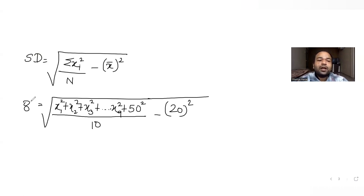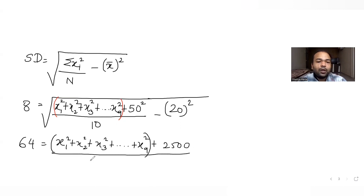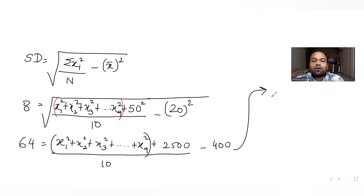We use the incorrect mean because we are working with the incorrect standard deviation to extract the sum of squares of the first nine observations. Squaring both sides gives: 64 = (sum of first nine squares + 2500)/10 − 400. Moving 400 to the other side: (64 + 400) × 10 = sum of first nine squares + 2500, so 4640 = sum of first nine squares + 2500.